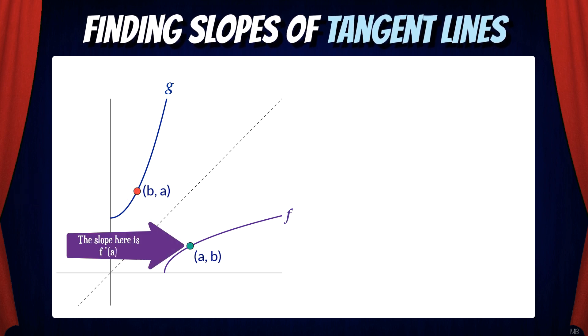Well, what's the slope at the point a? That's just f prime of a. So in other words, g prime of b equals 1 over f prime of a.